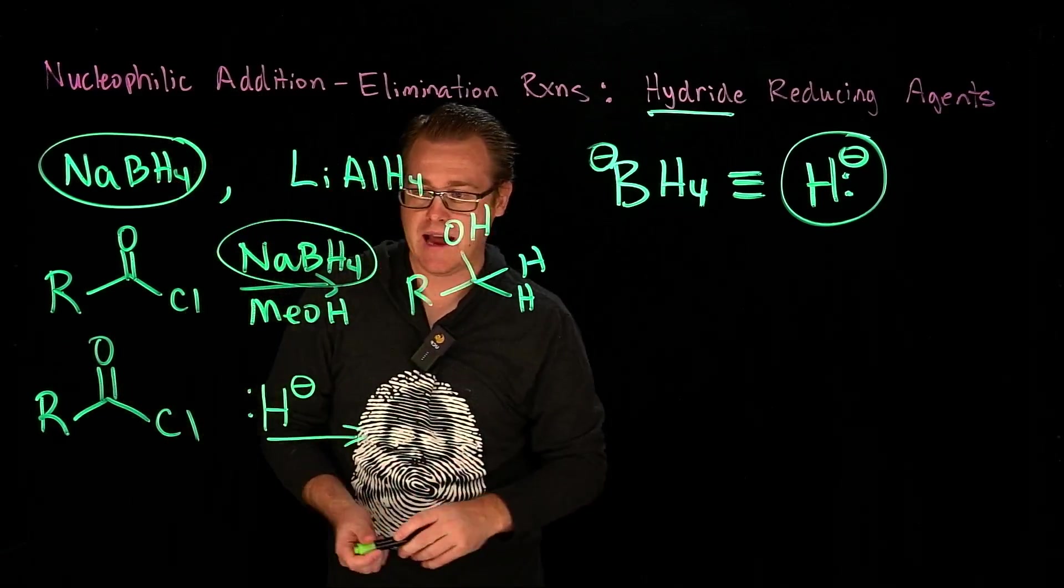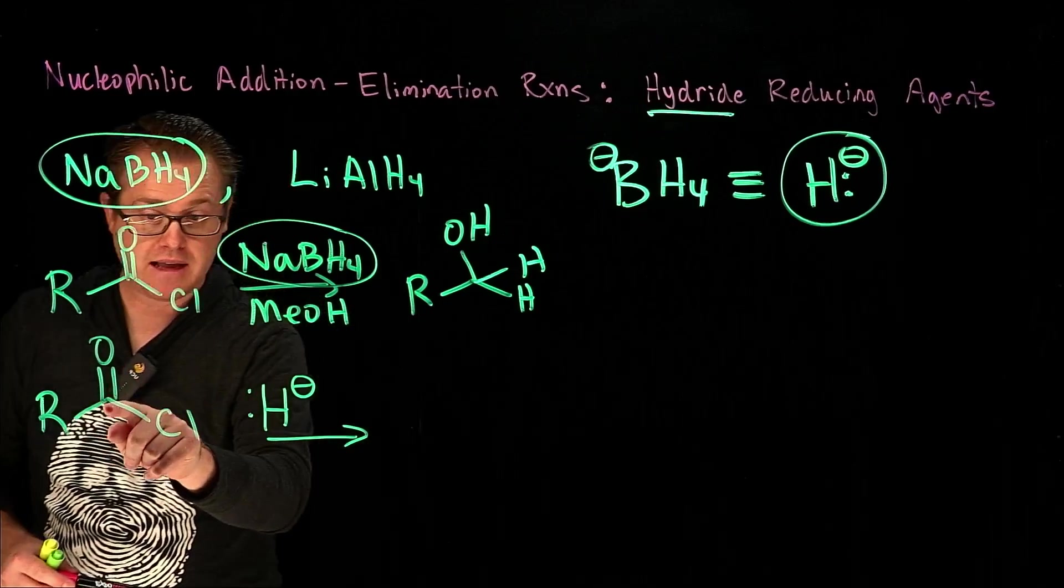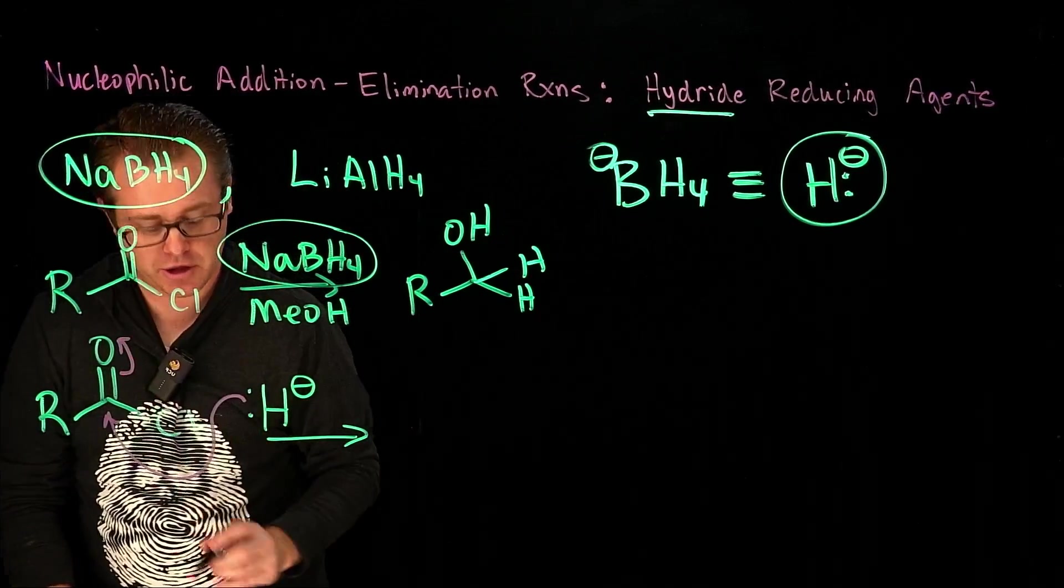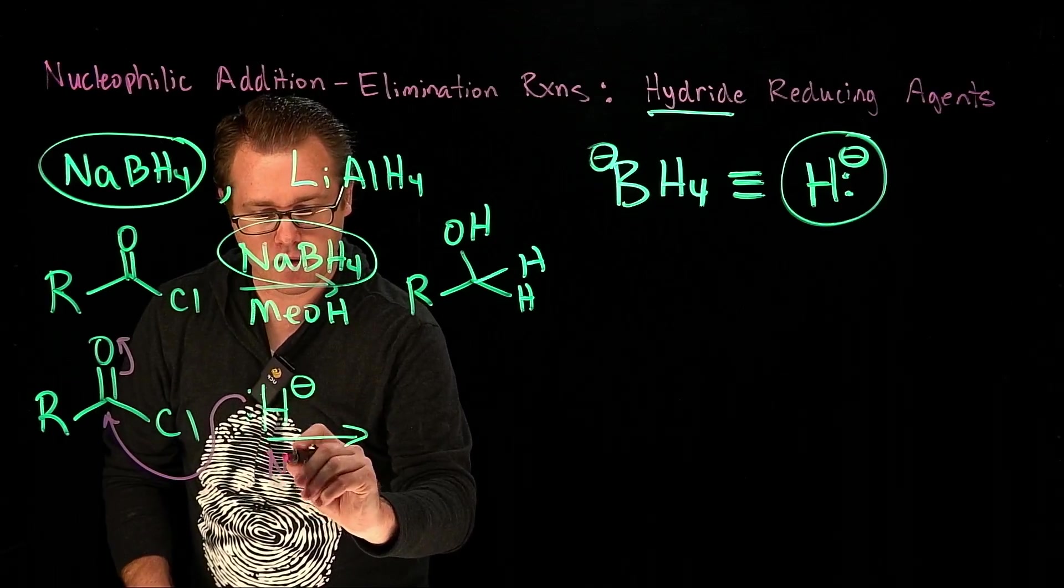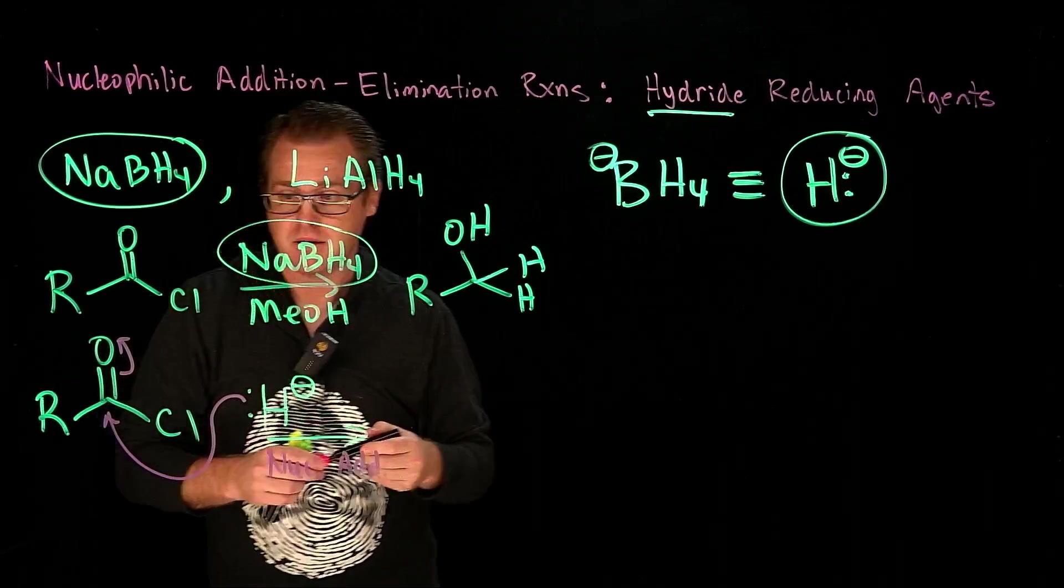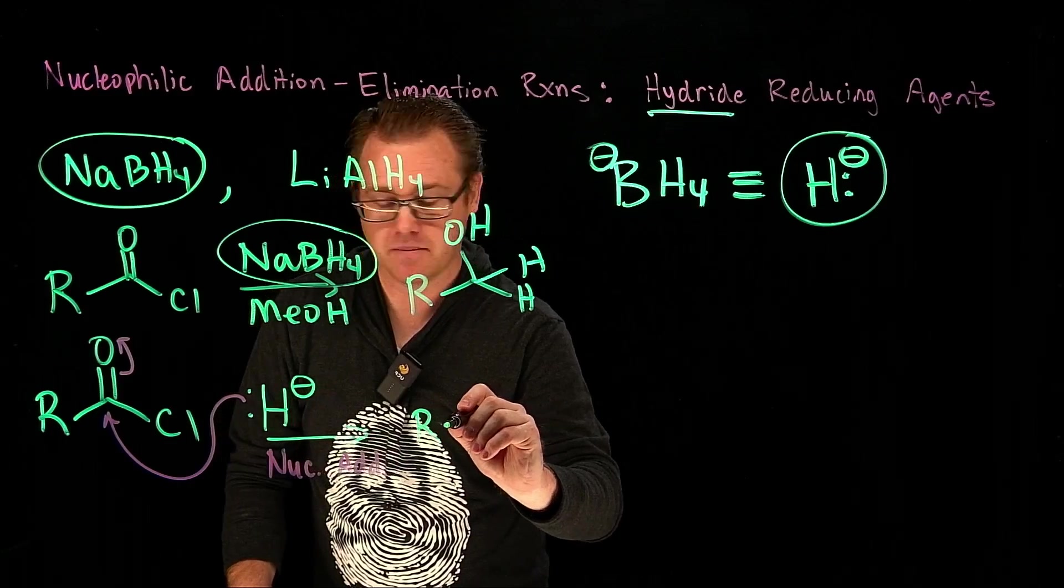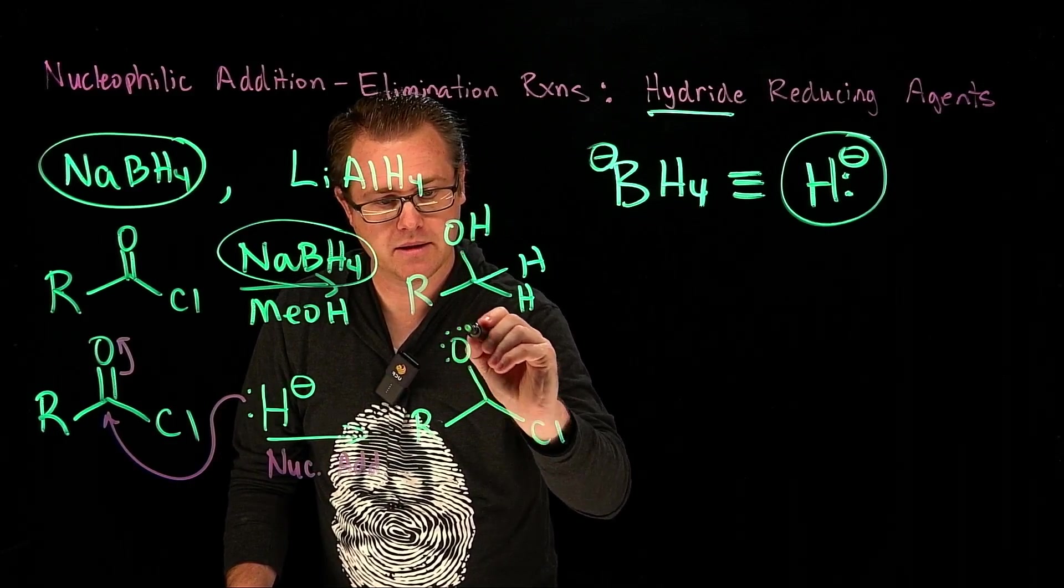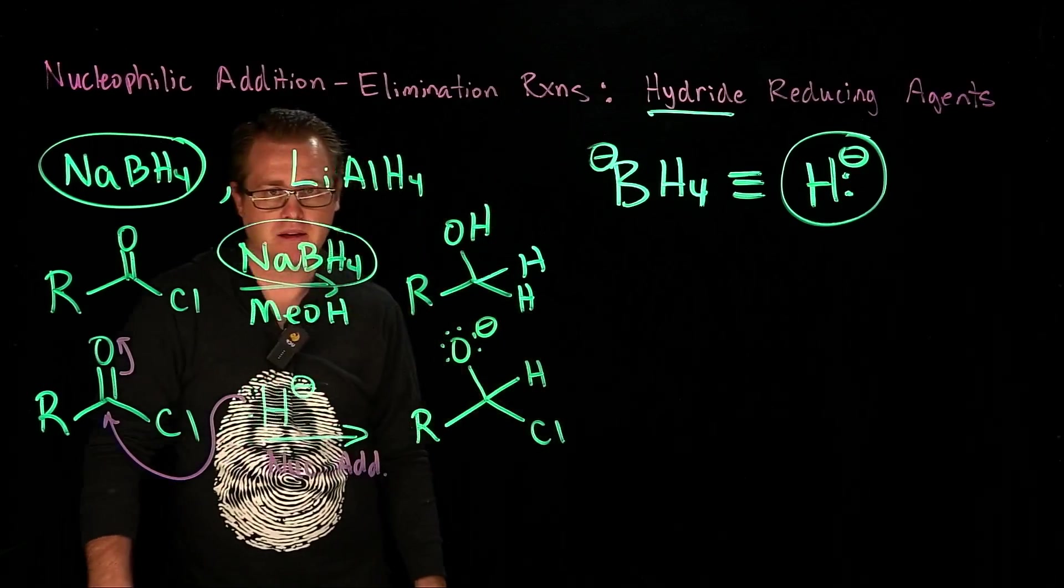And so what's going to happen now is we can see that's electron-rich, that carbon is electron-poor, so we are simply going to do a nucleophilic addition step right here. So we will go nucleophilic addition step, and that's going to generate this species right here, O minus, and we just added that hydrogen right there.